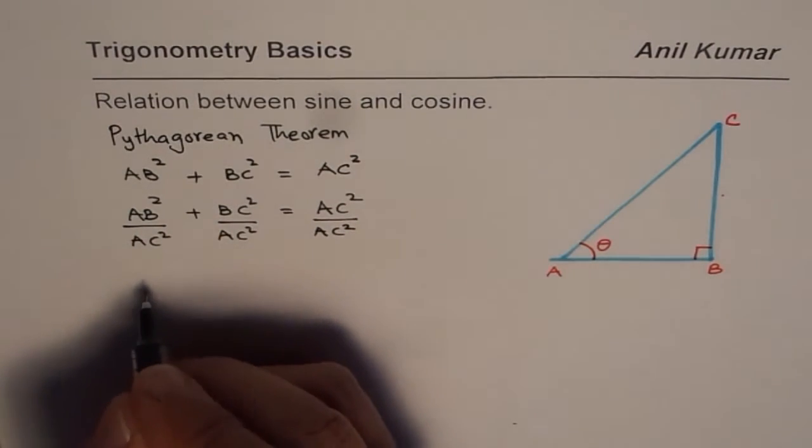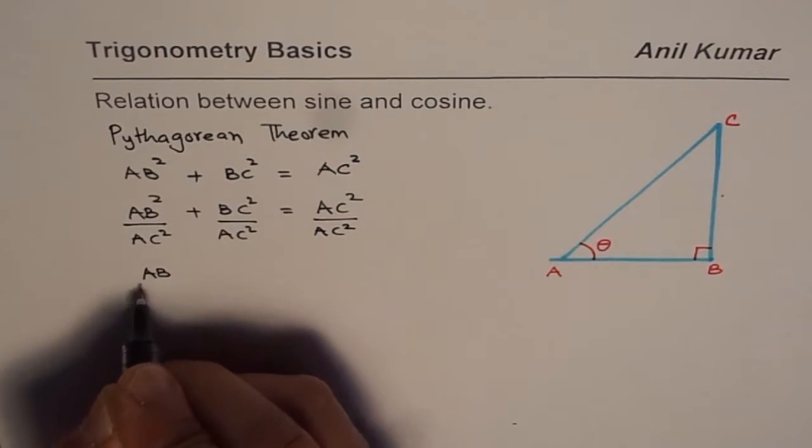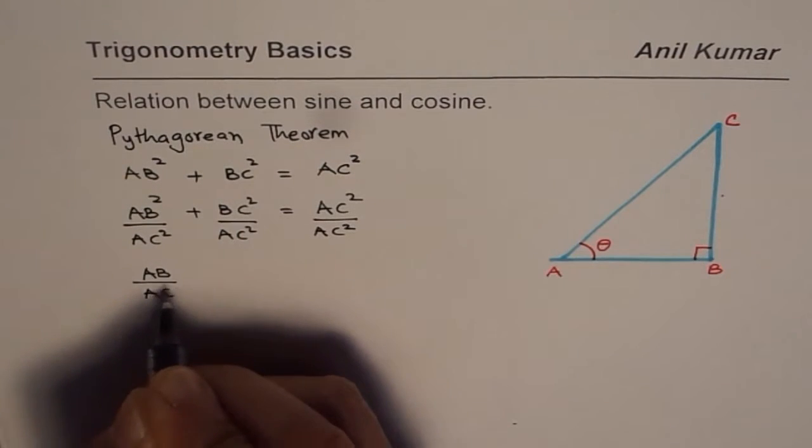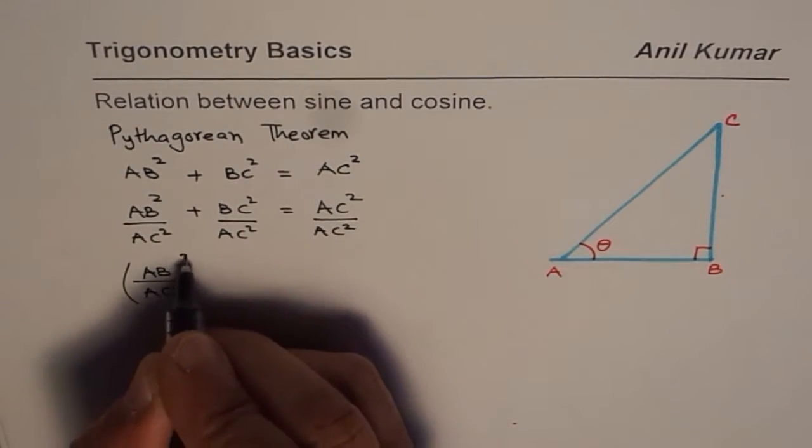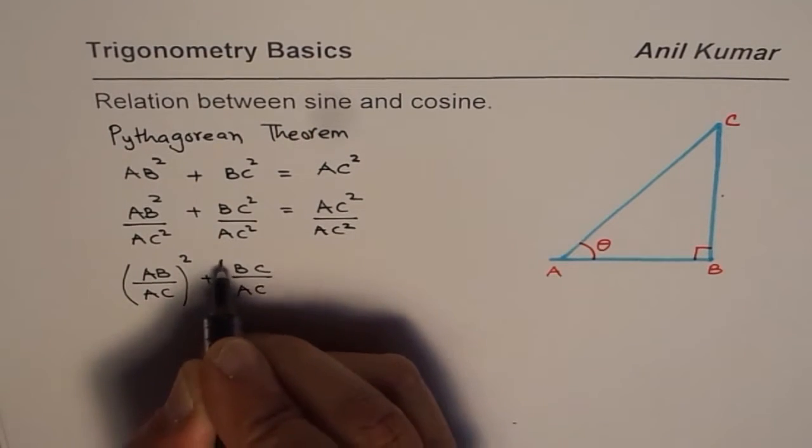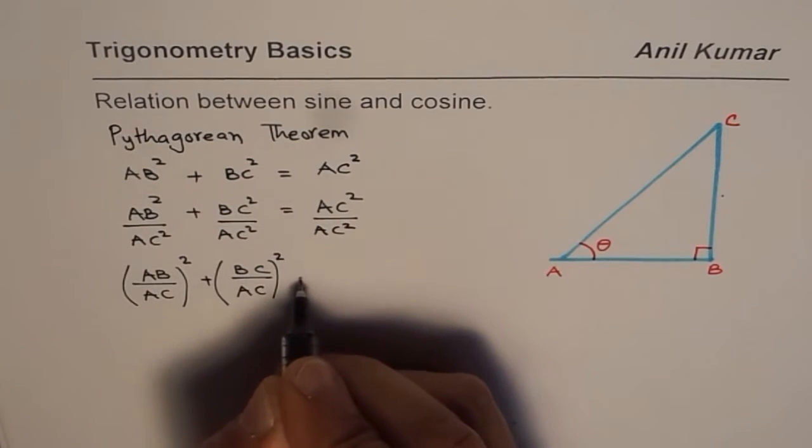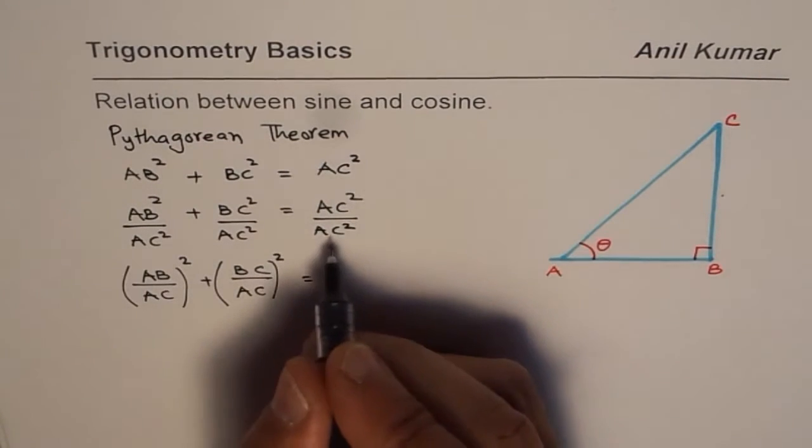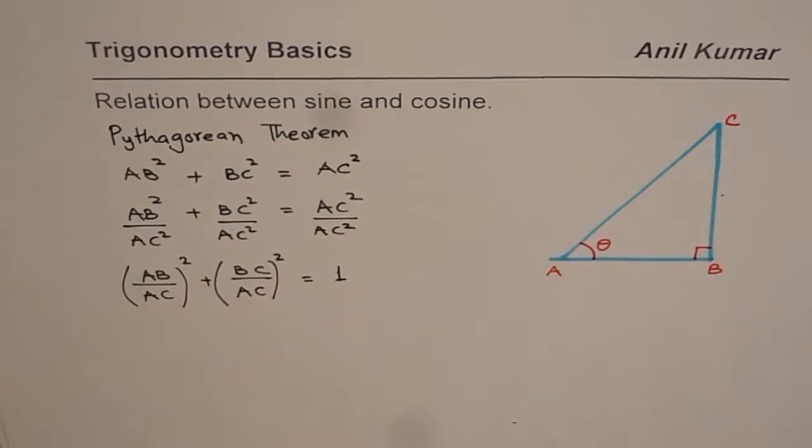So we get (AB/AC)² plus (BC/AC)² equals 1.